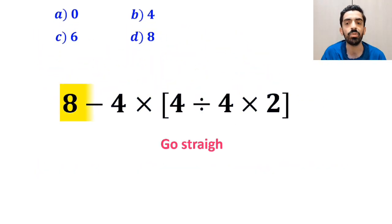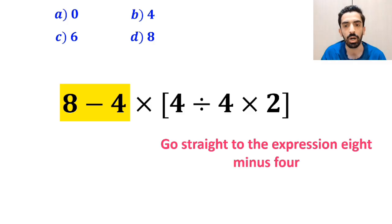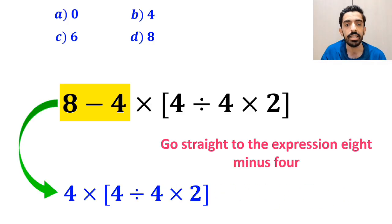Many people at first go straight to the expression 8 minus 4, which I've highlighted in yellow, and instead of this expression, they write 4 multiplied by 4 divided by 4 times 2 inside the brackets.